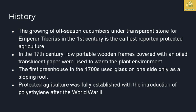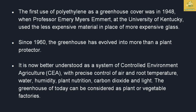Looking at the history, the first off-season cucumbers were transplanted by Emperor Tiberius in the first century. In the 17th century, low portable wooden frames covered with oiled translucent paper were used to warm the plant environment during cold climatic conditions. The first greenhouse used glass in the 1870s, with one side having a sloping roof. Polyethylene sheets were introduced during World War 2, and their use as a glass cover was established in 1948, discovered by Professor Emery Myers Emmert at the University of Kentucky as a less expensive replacement for glass.